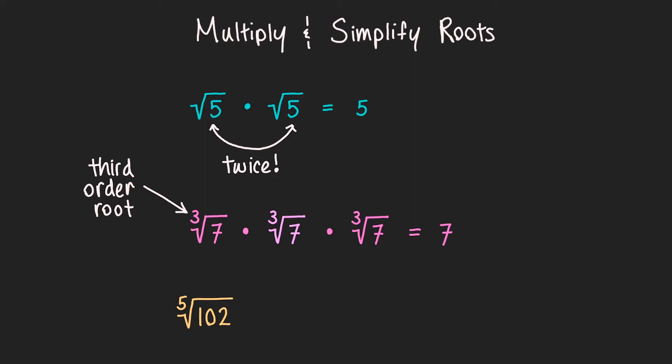And how many of these 5th roots of 102 would we need to equal 102? This time, we will need to multiply 5 of them to equal 102, because we're dealing with the 5th order roots. I think you have the gist of it now.